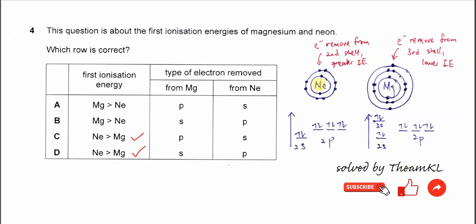So now the second thing is the type of electron removed from magnesium and neon. So for this one we need to use the orbital diagram, electron orbital diagram.